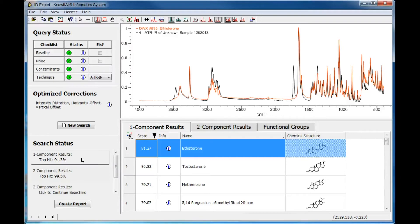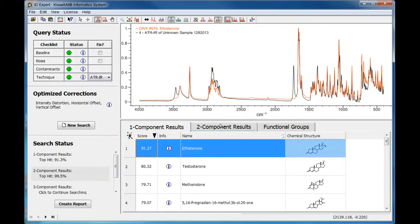The multi-component tab flashes to let you know a better match has been found. Click on that tab to view the results. Two steroids are clearly identified in the spectrum as a 99.5% match. Click the Information icon to view more information on each component identified.